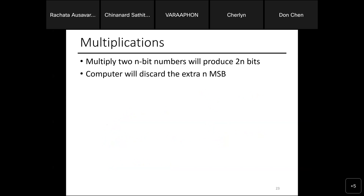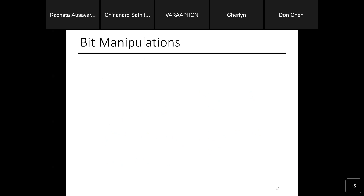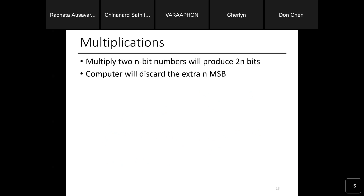Multiplication can easily overflow. If you multiply two N-bit numbers, the result can be up to 2N bits. Make sure your result variable's data type is large enough to hold the product; otherwise, you'll get a wrong result due to overflow.